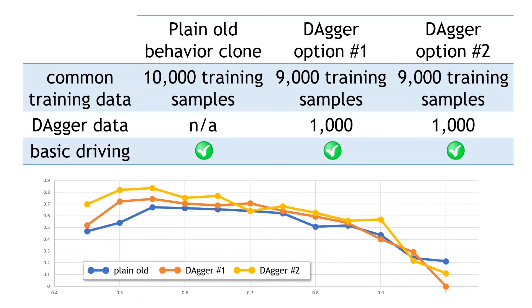So, in general, it seems that the additional training data collected via Dagger does tend to lead to an improved policy in terms of the driving accuracy.